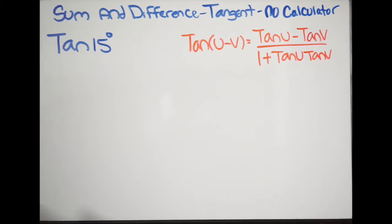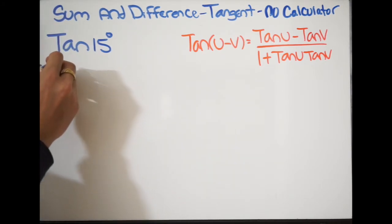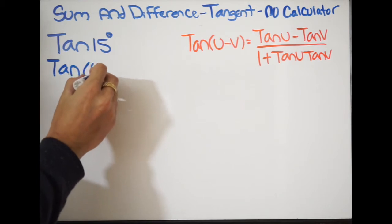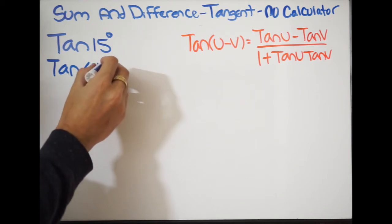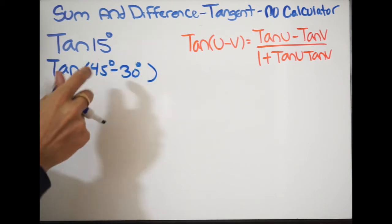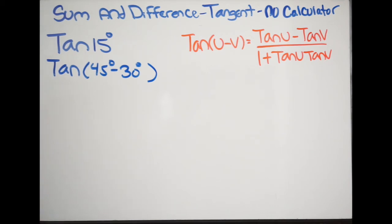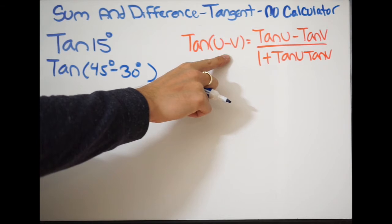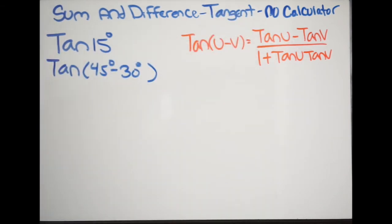So I have tangent of 15 degrees. What I want to do is think about how I can rewrite this. I can do tangent of 45 degrees minus 30 degrees. That is tangent of 15 degrees, but we just rewrote it, and now it's in the difference formula format, so I can go ahead and expand it out.